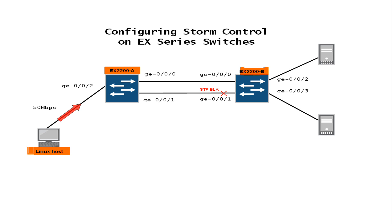In the factory default configuration, Storm Control is enabled on all switch ports, but the default bandwidth level that triggers the protection is high – it's set to 80% of link speed. Without a configuration change, our storm will be flooded in the network and affect its performance.